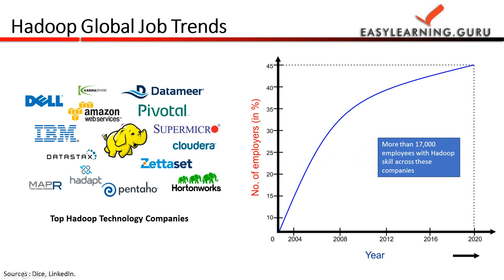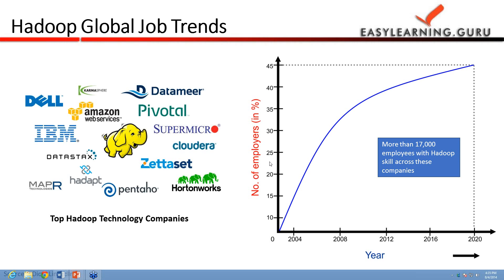Finally, Hadoop global job trends: various firms like Amazon Web Services, IBM, Zettaset, and Hortonworks are all dealing with Hadoop technology. One graph shows that the number of employees with Hadoop skills is more than 17,000 across these companies, projected by 2020.